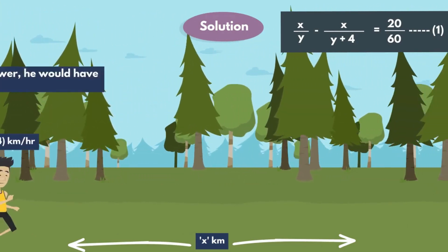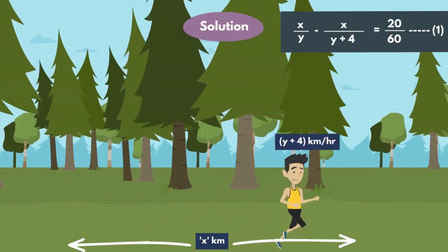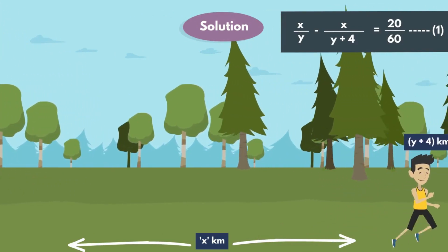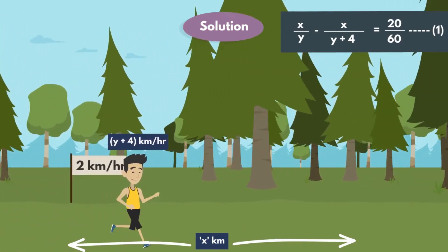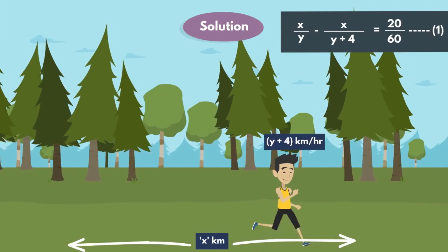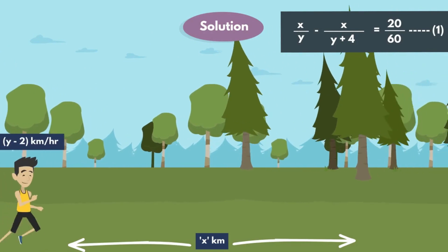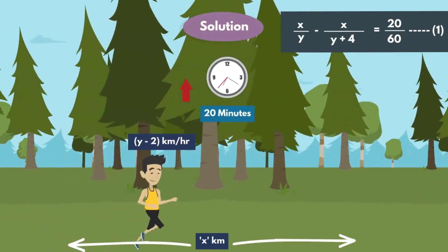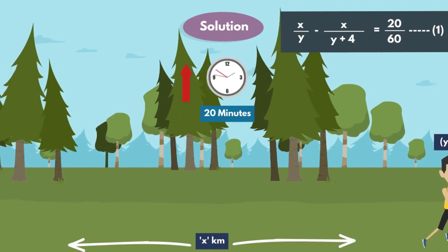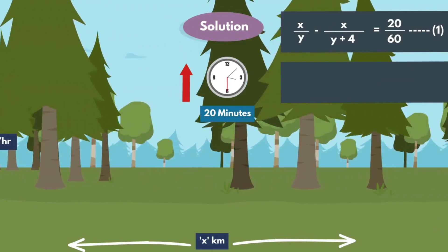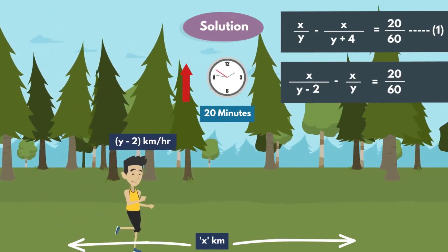In the next statement they given that he had moved 2 km per hour slower, he would have taken 20 minutes more. So here, the man moved 2 km per hour slower. Then the speed of the man is y minus 2, and he would have taken 20 minutes more. So it can be written as x by y minus 2 minus x by y, that equals to 20 by 60. This is equation 2.